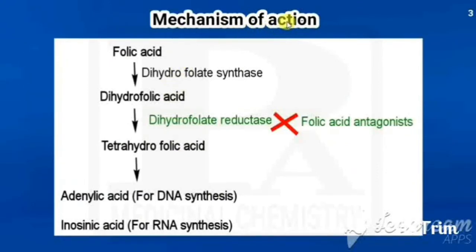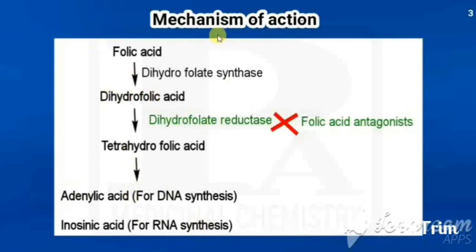The mechanism of action of methotrexate: folic acid is converted to dihydrofolic acid by dihydrofolate synthase, and then converted to tetrahydrofolic acid by dihydrofolate reductase. Tetrahydrofolic acid is responsible for synthesis of adenylic acid and inosinic acid — adenylic acid is essential for DNA synthesis and inosinic acid is essential for RNA synthesis. Methotrexate, as a folic acid antagonist, inhibits the enzyme dihydrofolate reductase, so tetrahydrofolic acid is not synthesized, and therefore DNA and RNA synthesis are inhibited.